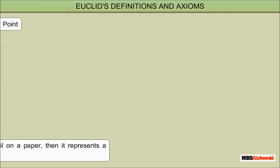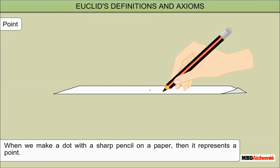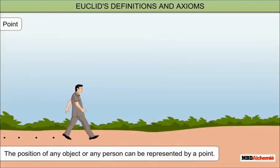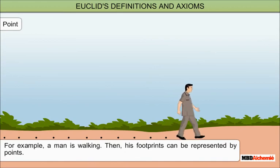Point: When we make a dot with a sharp pencil on a paper, it represents a point. The position of any object or any person can be represented by a point. For example, a man is walking, then his footprints can be represented by points.